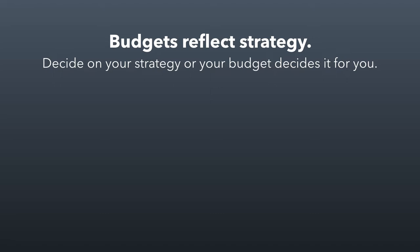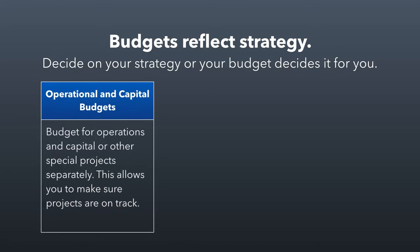A few things about how budgets work for non-profit organizations. Number one, most non-profits account separately for operations and capital budgets. Your ongoing operations should have a budget attached to them, and any special projects should be budgeted separately. So if you're planning on building a new building, starting a new program, or doing things outside of your typical operations, you should be budgeting separately for that project. This allows you to make sure your projects are on track.